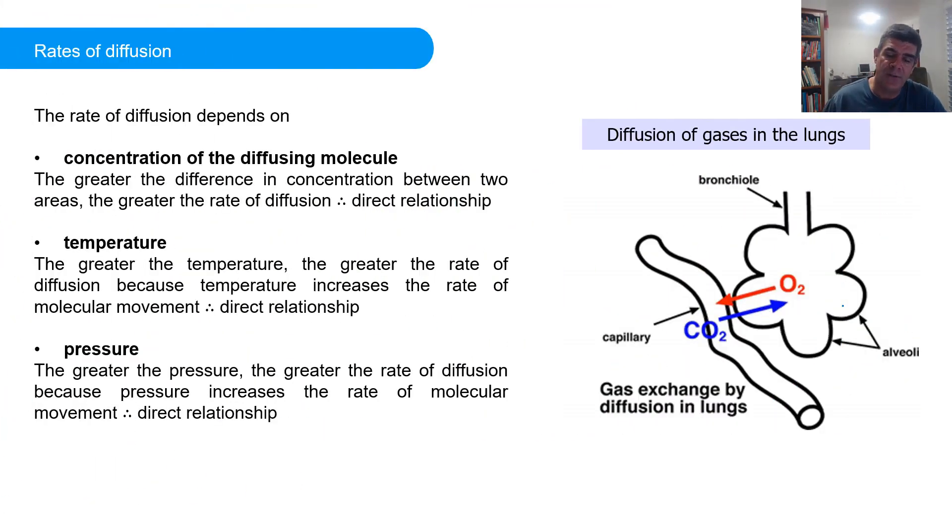There are three important factors that affect the rate of diffusion, and they are the concentration of the particular substance that we're looking at that is diffusing, the temperature of the system, and also the pressure. Of course, pressure is going to be more relevant usually for gases than for solutions. But nevertheless, pressure is a very important factor that affects the rate of diffusion.